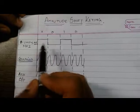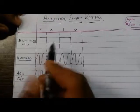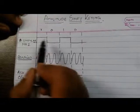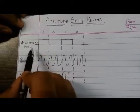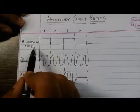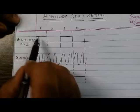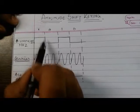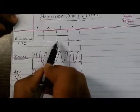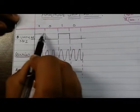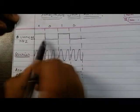The first step in this experiment is to convert the given data into unipolar Non-Return-to-Zero form. So here we get Non-Return-to-Zero form — for 1 we get logic 1, and for 0 we get logic 0.